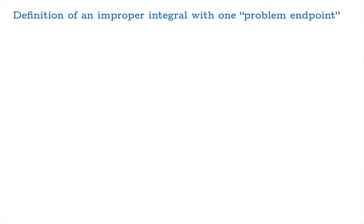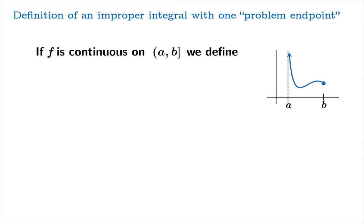So here's how we define an improper integral with one problem endpoint. Suppose f is continuous on the interval from a to b excluding the endpoint a. So this definition allows for example there to be a vertical asymptote at the argument a. We will define the integral from a to b of the function f to be the integral from k to b and then we'll let k go to a from the right.